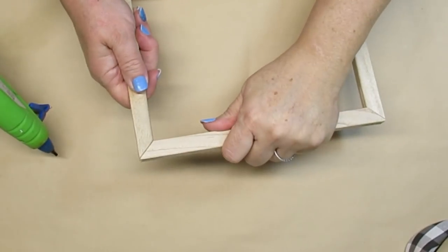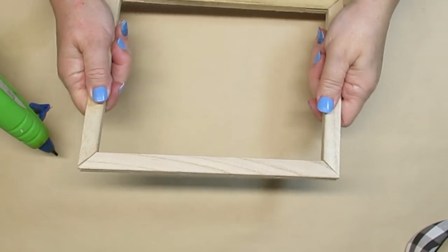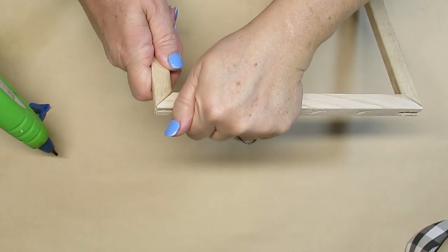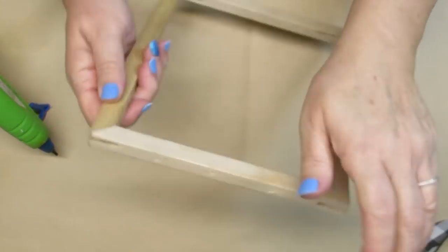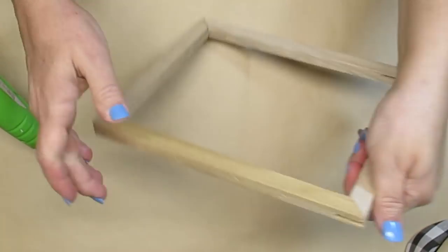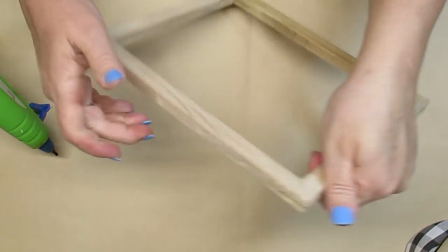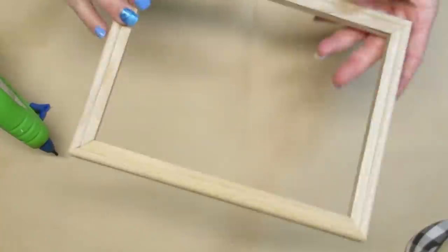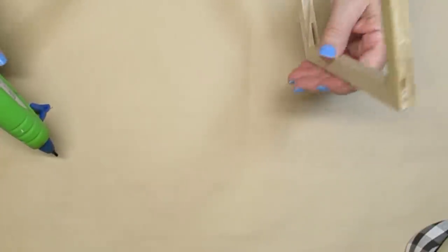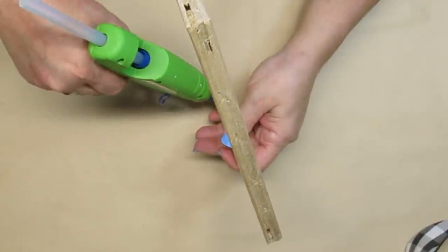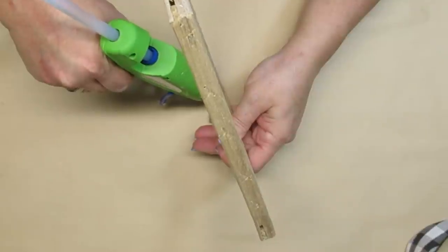Some of the frames have staples in them, but I noticed on this one it didn't. It just had two sort of finger jointed corners. And so what I did is just push them together and added a little bit of hot glue inside the holes on the inside of the frame to hold them in place and make sure that they didn't wiggle and fall apart.